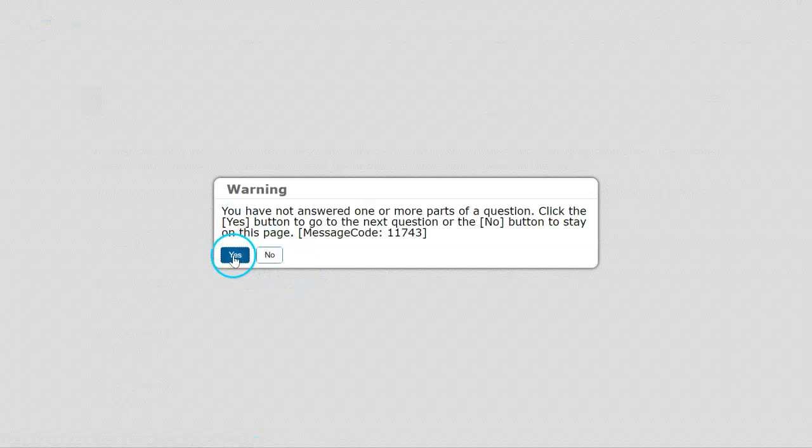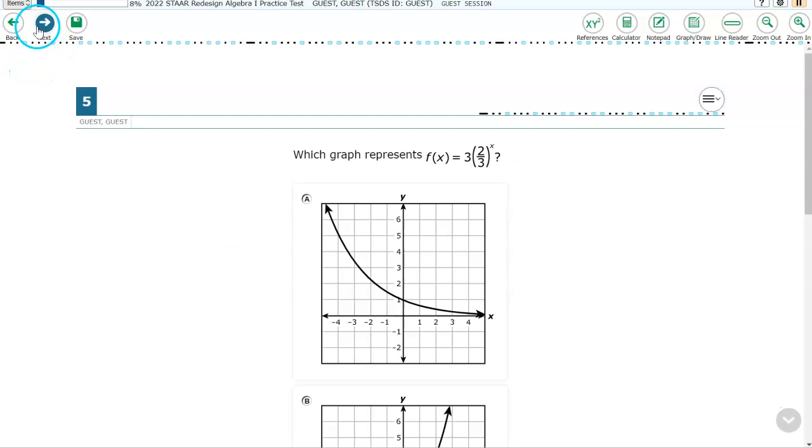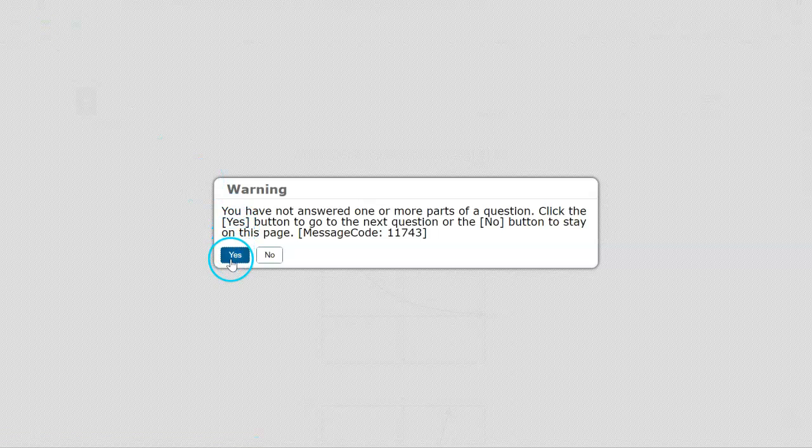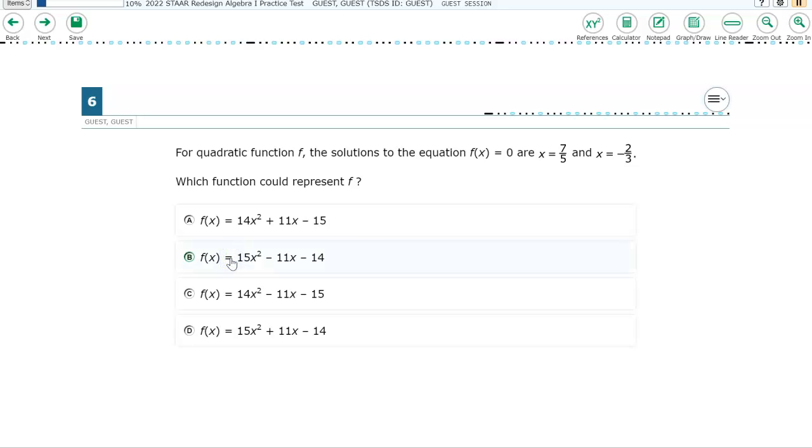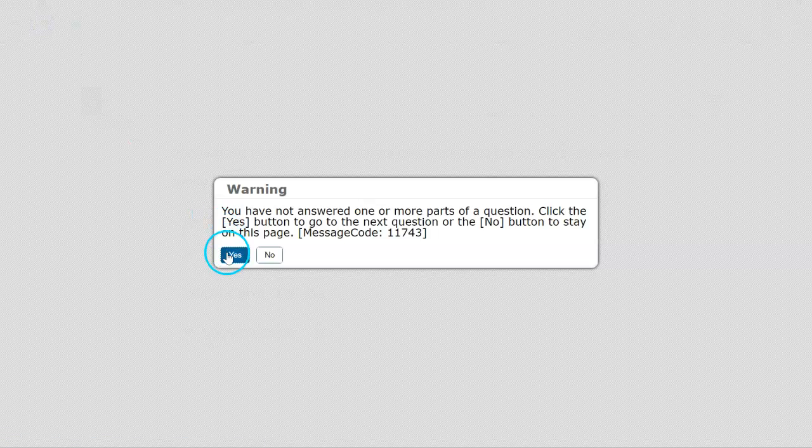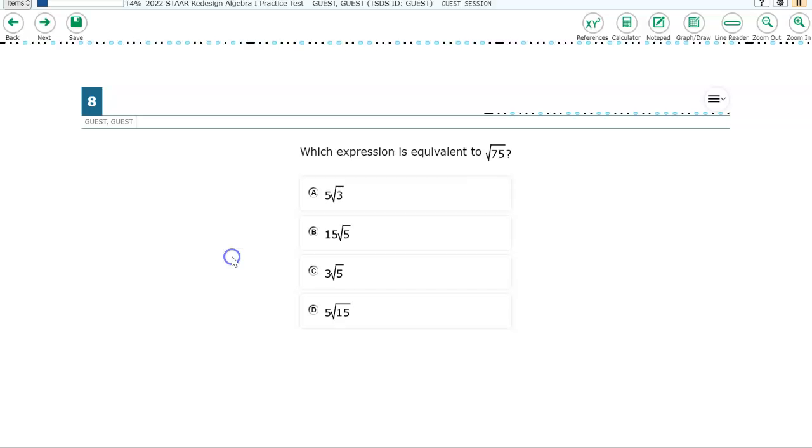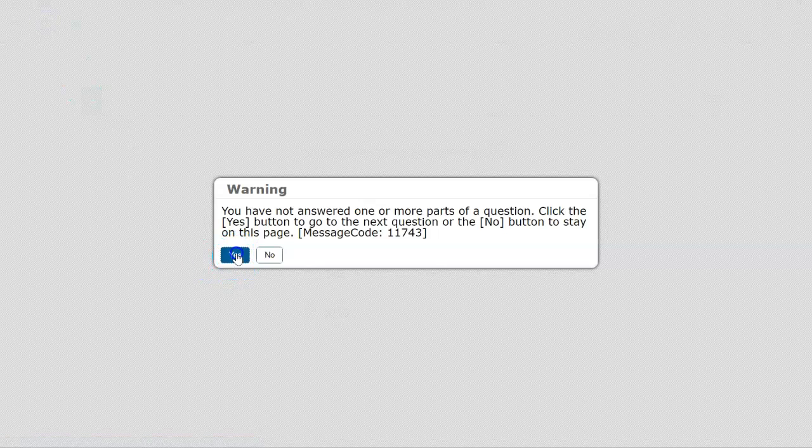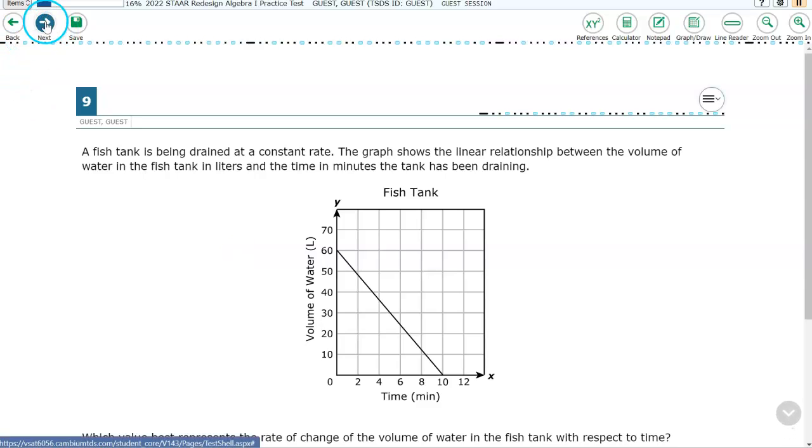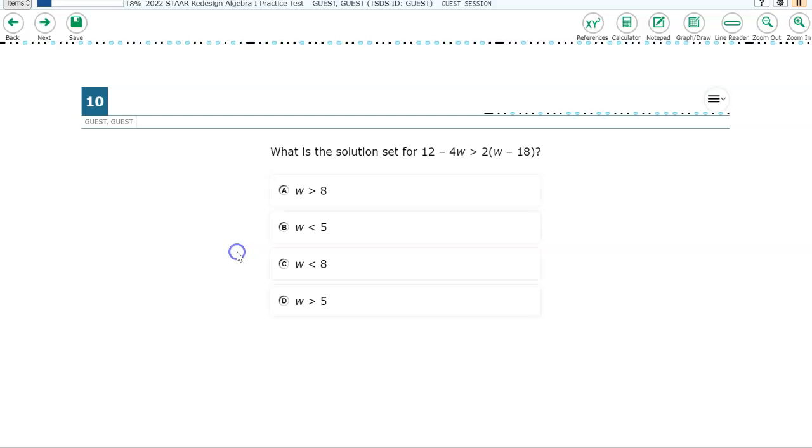We are going to continue doing this over and over again until we get to Item 32. Because this is an adaptive test, they do not want you skipping questions, so that's why they make it challenging to do that. Since this is a practice test, it's not really an adaptive test. The actual test gives you different items depending on how you're doing. So instead of you watching me click this over and over, next and yes, pause the video, click through, and stop when you get to Item 32.